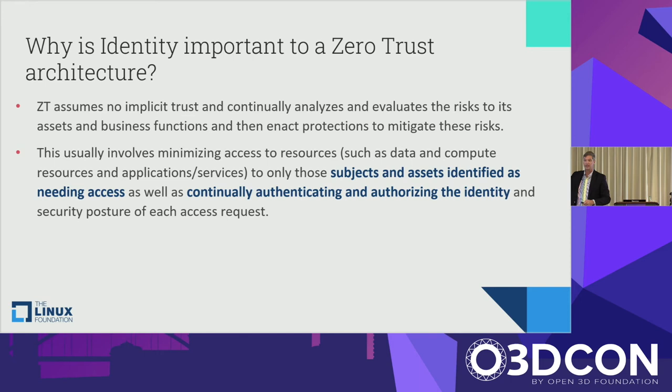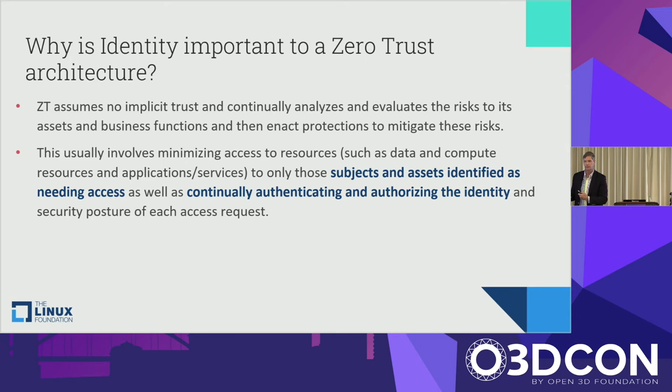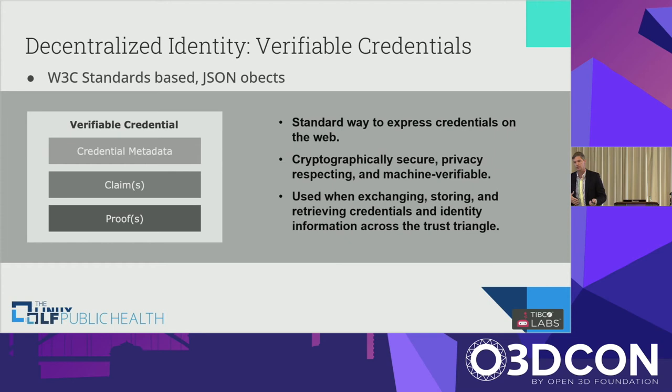Zero trust has evolved out of incidents like the SolarWinds breach, where basic access and authentication was compromised and used to work back up to a central system — and suddenly something was running around in the middle. Now, for any given scenario — whether I'm an IoT device or an AI/ML model — I have to prove I am who I say I am. In the case of a digital twin, it's a mechanism that lets me confirm I'm talking to the right digital twin for me, not some fake construct trying to steal or emulate my identity, and that the data flow between us is correct.